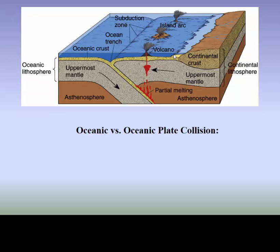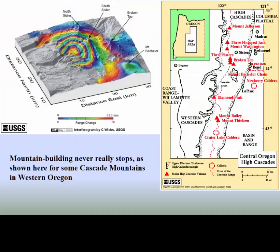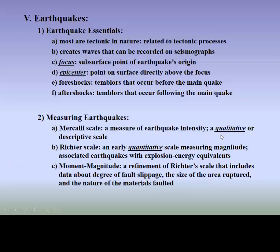We can see oceanic versus oceanic — we have this island arc, which is what the Aleutian Islands in Alaska are. Continental versus continental, and the mountain building never really stops. You can see these mountains along the Western Cascades here in Oregon.